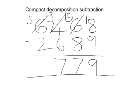And finally, 5 subtract 2 gives us an answer of 3. So the answer to 6,468 subtract 2,689 is 3,779.